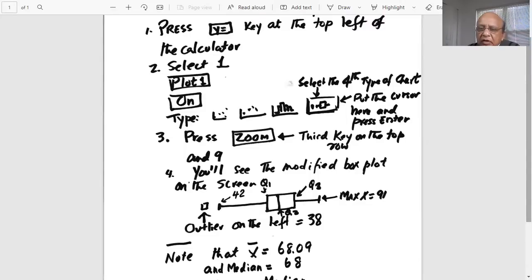What are the boundaries of the box? The left boundary is Q1, the right boundary is Q3, and the line in the middle of the box is Q2 or the median. Notice in this case, the left line, the whisker from Q1, extends only up to 42, not all the way up to 38. 42 is the next highest number after 38. The left whisker only extends up to 42, not up to 38, because 38 is an outlier.